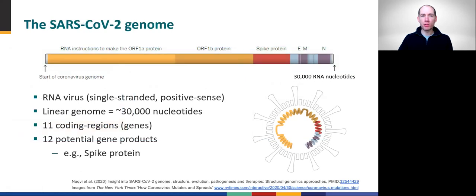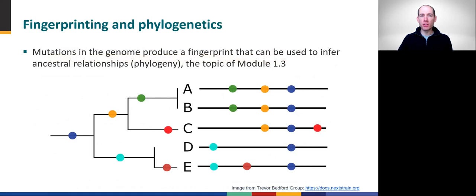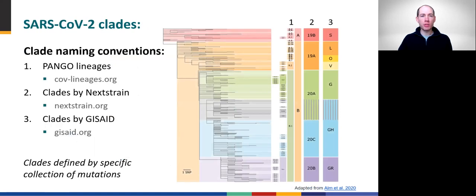In Module 1.2, we introduced some basic features of the SARS-CoV-2 genome, shown here with a simple schematic in which varied colors indicate different genes encoded within the roughly 30,000 RNA nucleotides. A single copy of this linear RNA genome is packaged inside every SARS-CoV-2 viral particle. Mutations occur within the genome as viruses spread among susceptible hosts, producing a genetic fingerprint that can be used for phylogenetics and thus genomic epidemiology. Importantly, this process of mutation accumulation is never-ending, leading to distinct divisions within the global SARS-CoV-2 population.